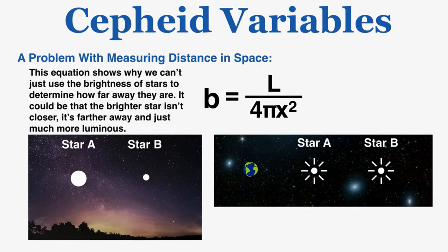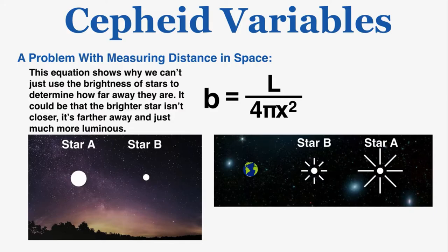But that conclusion wouldn't necessarily be correct, because star A could simply be more luminous than star B — giving off more energy per second — and could be farther away while still appearing brighter. A star's brightness alone cannot tell us how far away it is. The brightness equation could be useful for finding distances, but we would need to know the star's exact luminosity in order to calculate the actual distance.